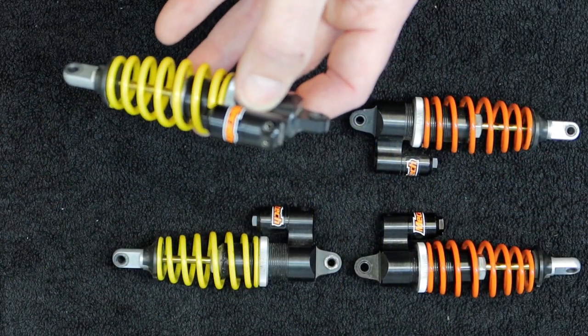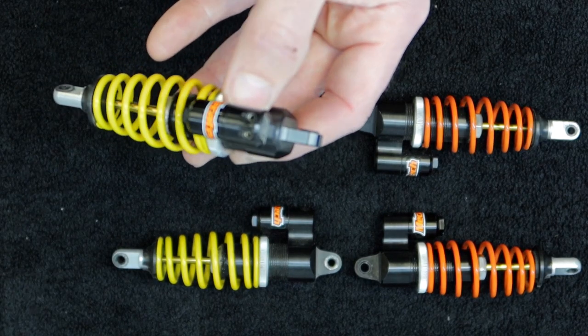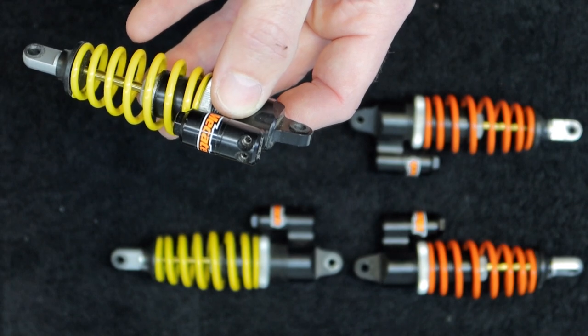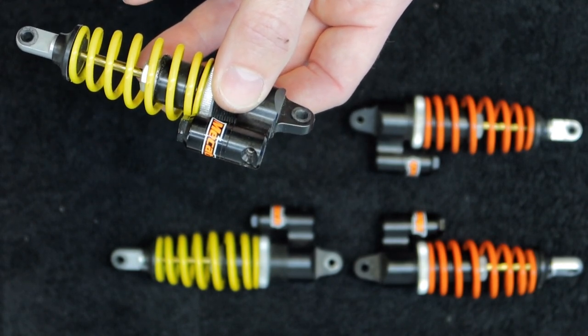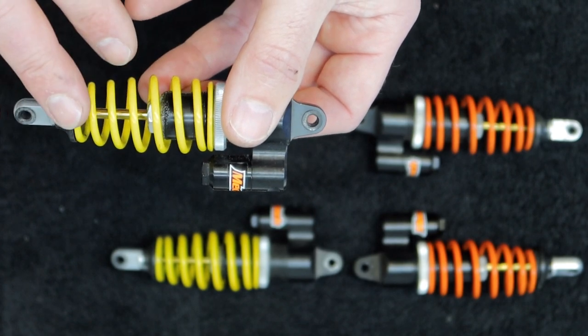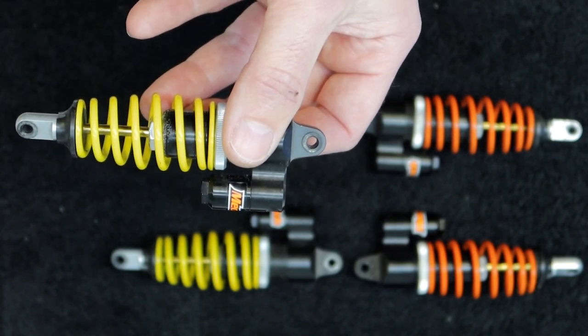Before we start the rebuild, we'll go over to the parts washer and give these a clean. There's a couple little bleed nipples there that we need to get to and quite often they're full of gunk and dirt and they need to be spotlessly clean for this rebuild process. So does the outside of the body and this shaft.